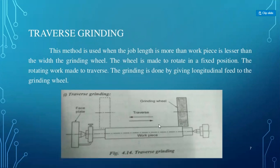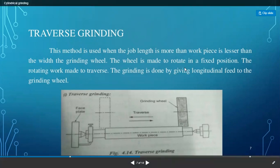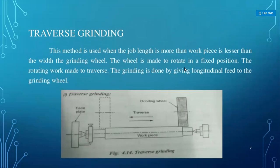In traverse grinding, the wheel is fixed at one position and does not move laterally on its own — only the workpiece moves left to right. The grinding is done by giving longitudinal feed to the workpiece. The workpiece rotates and moves in the linear traverse direction — left and right. Material is removed step by step by giving infeed depth of 1 mm, 2 mm, or 3 mm.